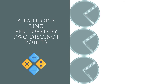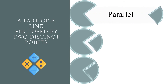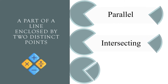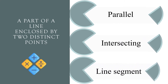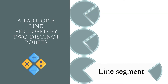A part of a line enclosed by two distinct points. Parallel, intersecting, or line segment? The correct answer is line segment.